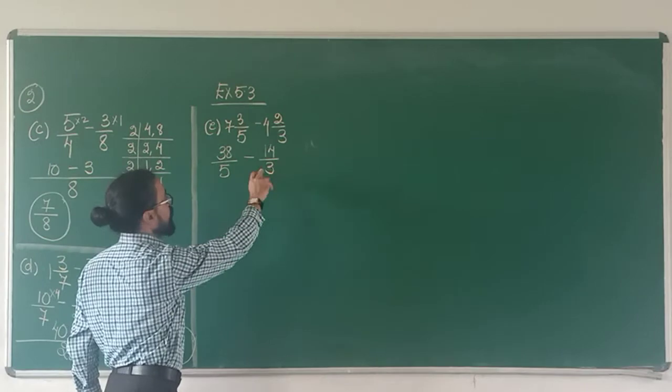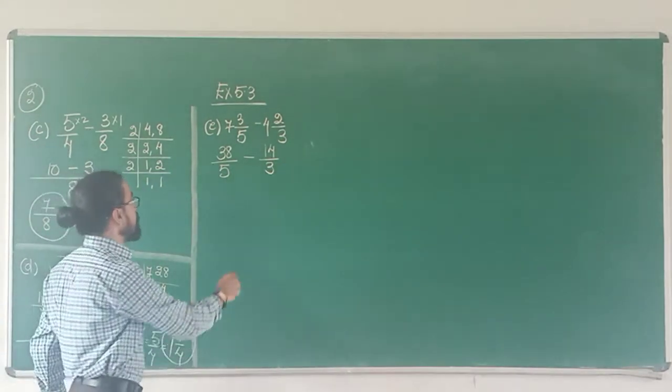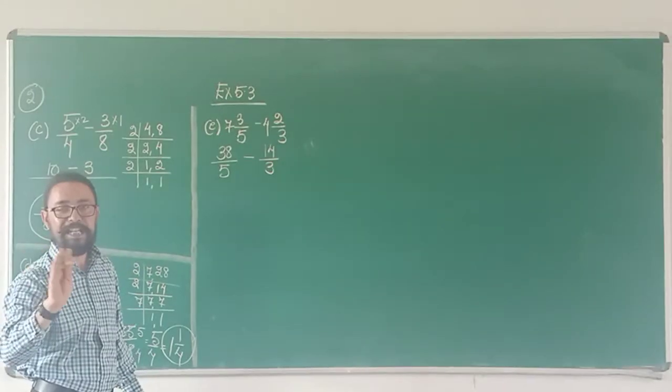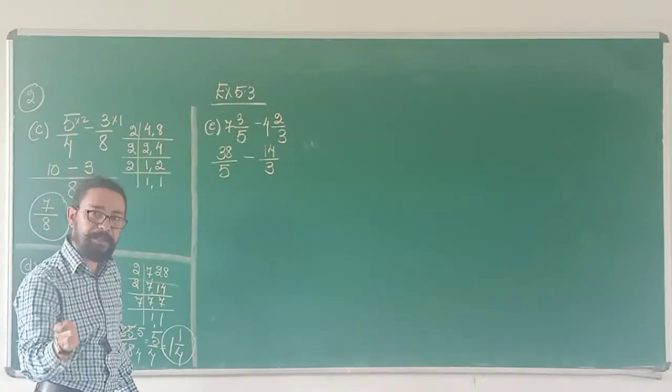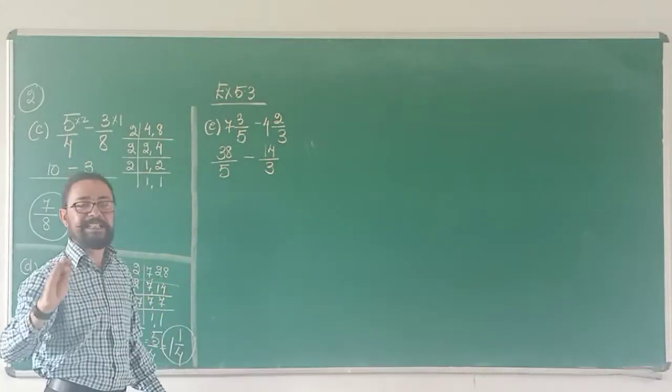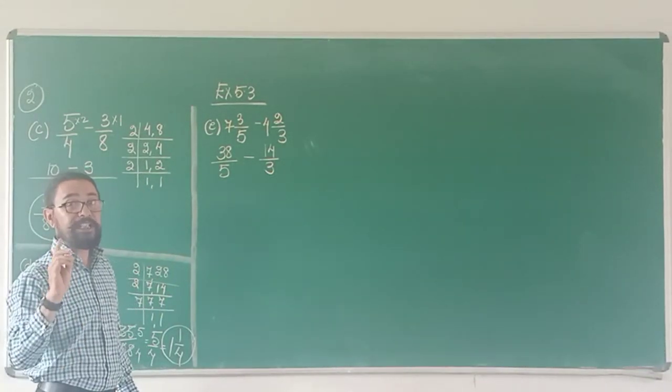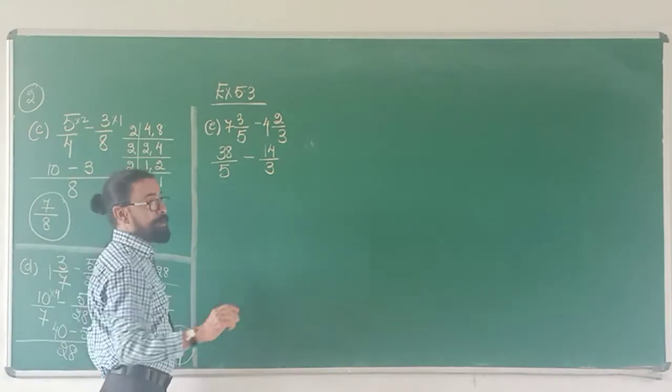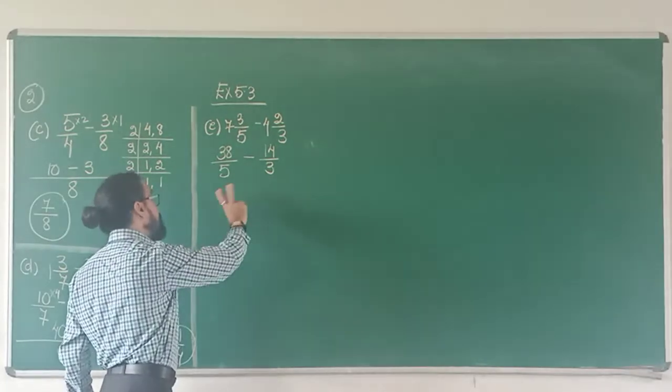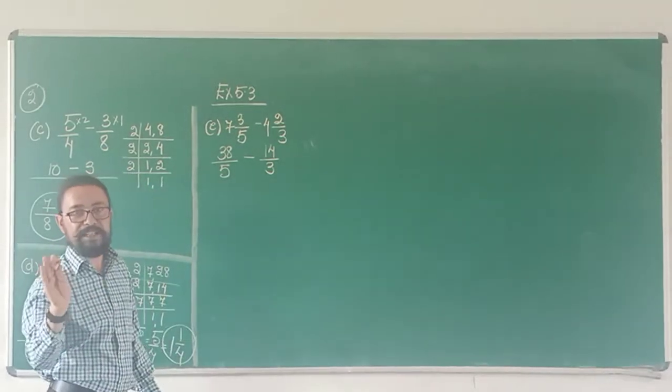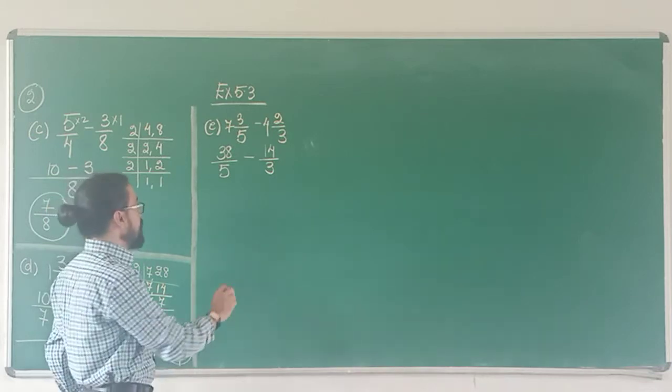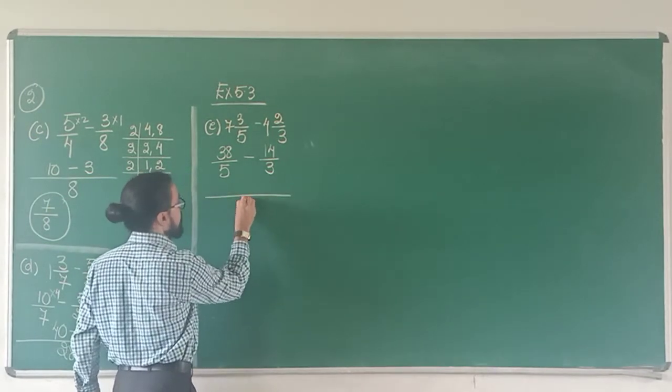Now I have to find the LCM of 5 and 3. Why? Because both are prime numbers. You need not find out the LCM if both denominators are prime numbers. All you need to do is multiply them and that is their LCM. Only in the case when there is one prime number and one composite number you can multiply them also. Or if both are prime numbers then you can multiply both the denominators, that is the LCM. So 5 times 3 is 15 is the LCM.